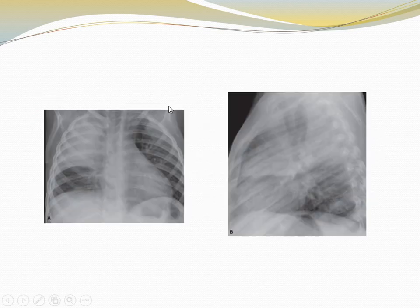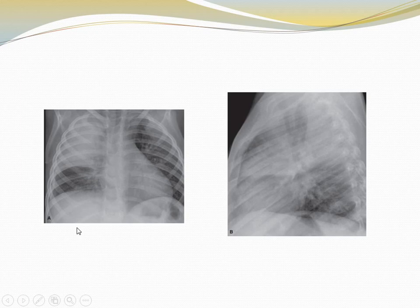This is the chest radiograph, PA view and lateral view, showing opacification of the right upper zone. The fissures are not displaced, so there is no volume loss due to the bacterial infection.